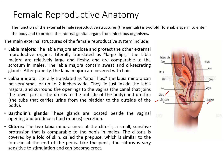Here is the female reproductive anatomy. The function of the external female reproductive structures is twofold: to enable sperm to enter the body and to protect the internal genital organs from infectious organisms. The main external structures of the female reproductive system are the labia majora, labia minora, Bartholin glands, and clitoris.